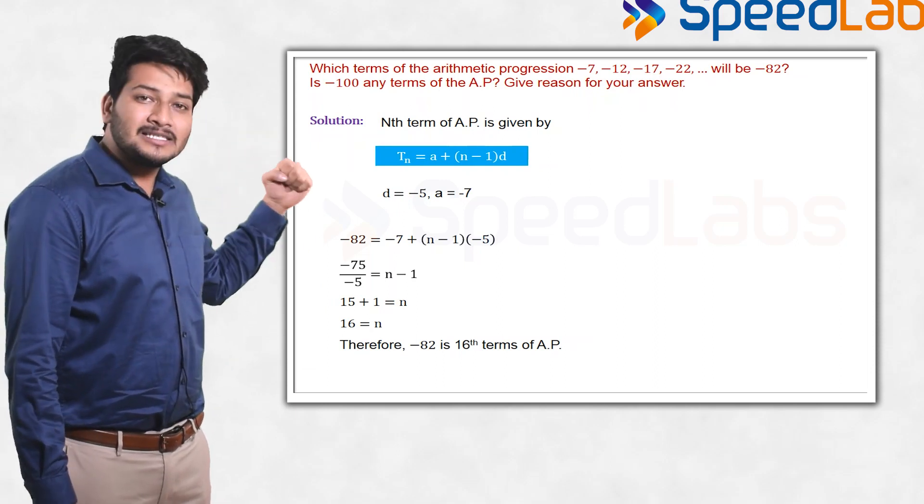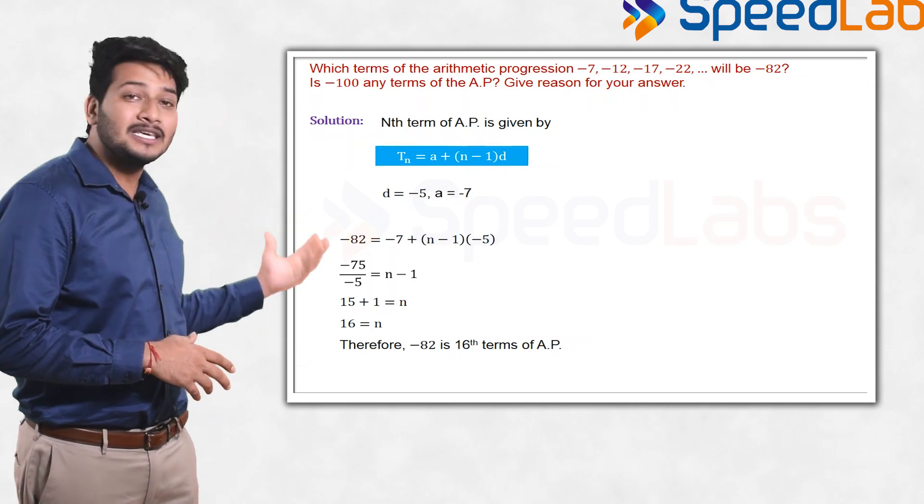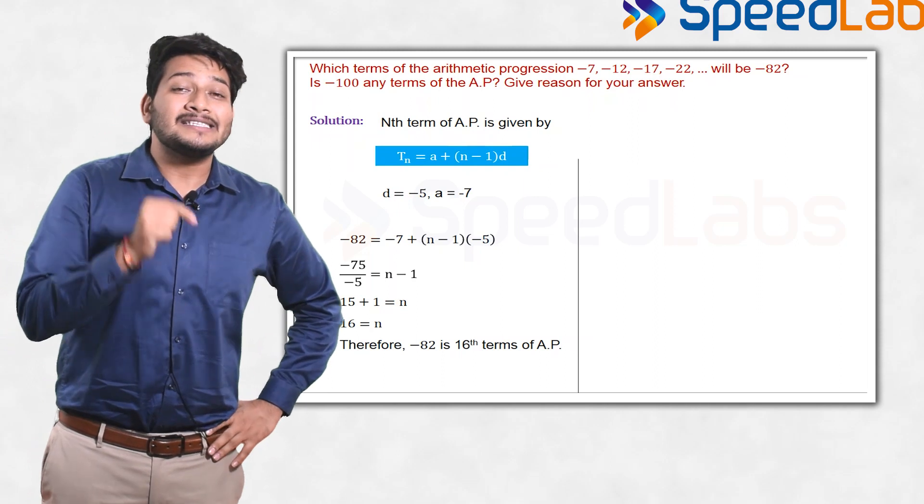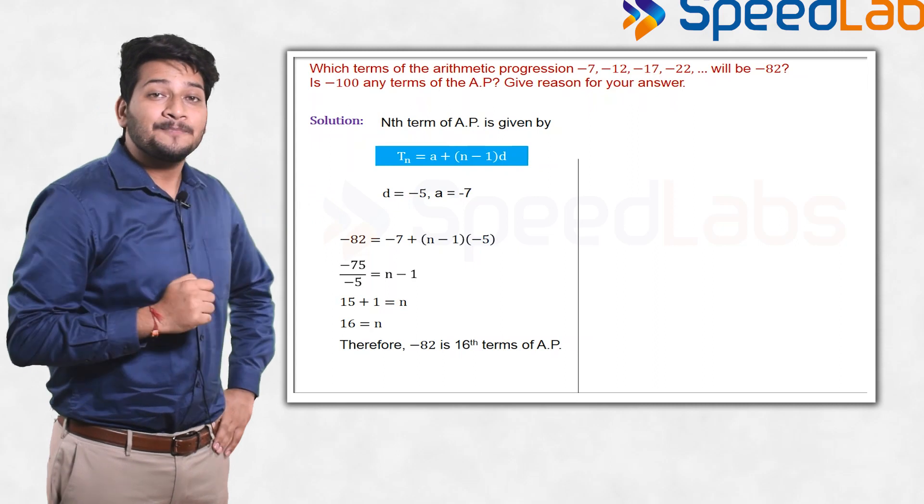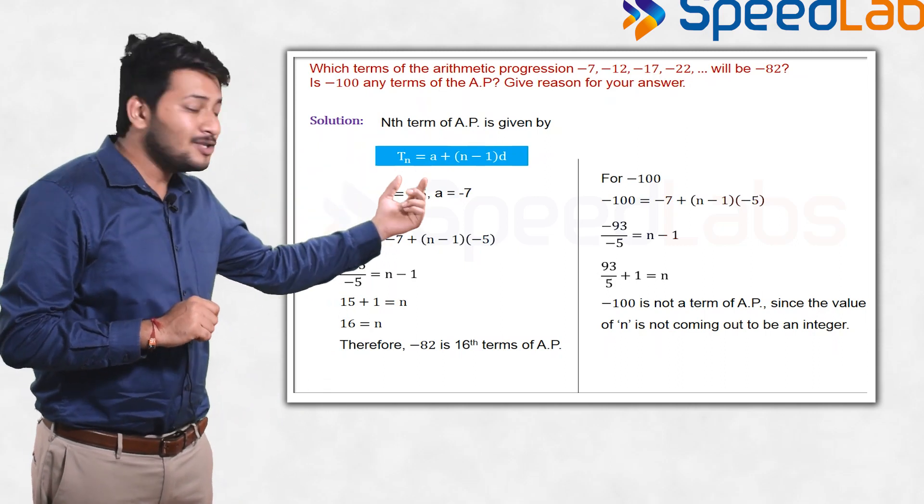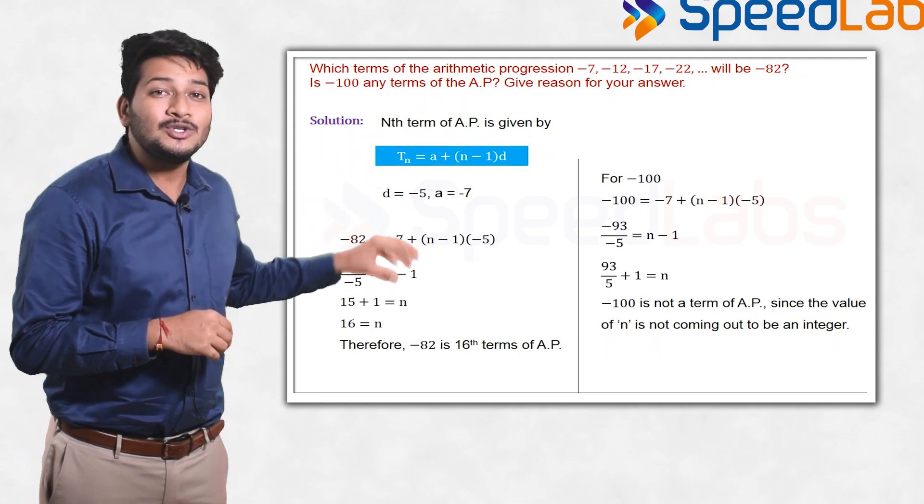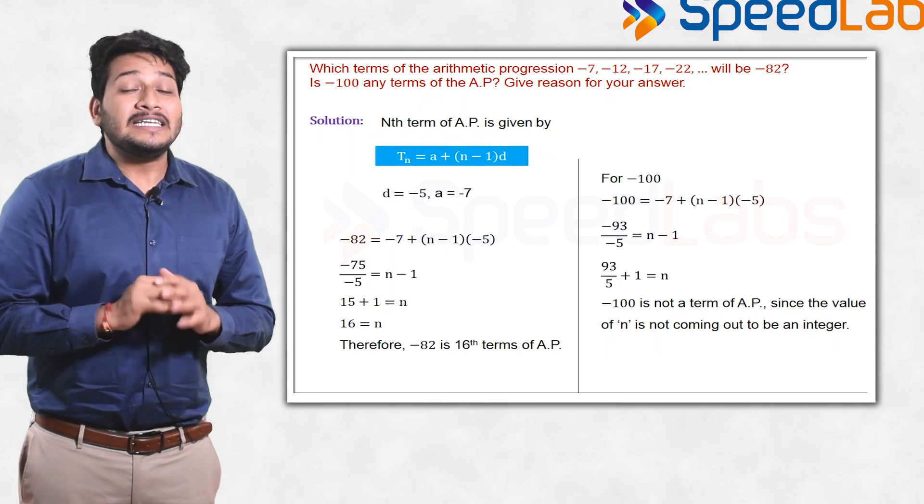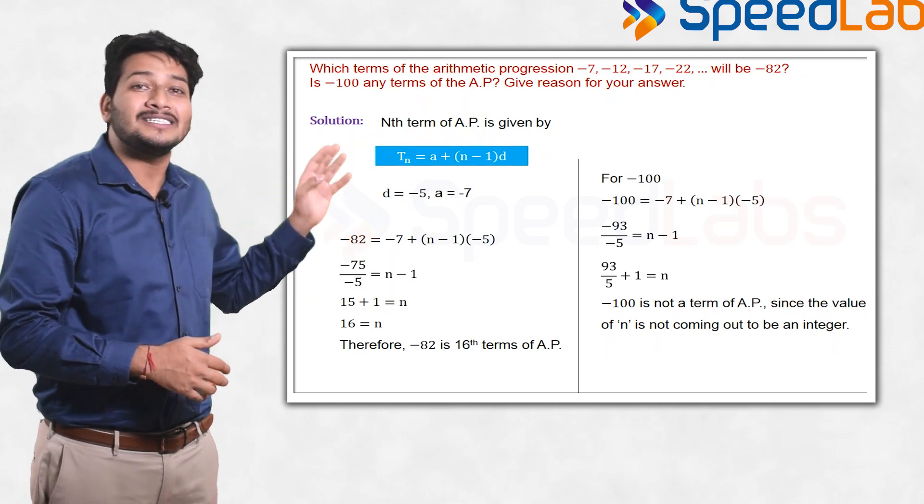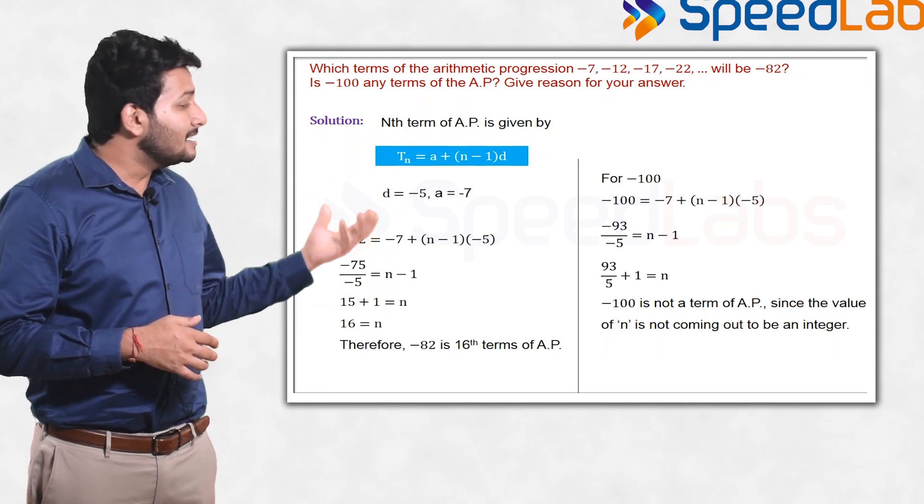In the next part, you're asked whether -100 is a part of this progression. You set Tₙ equal to -100. So -100 = a + (n-1)d, where a is -7 and d is -5. Calculate n. If you solve this, the value of n will be a fraction, not an integer. Any term, the nth term, cannot be in fraction form. It has to be the first term, 10th term, 16th term—some integer term. So we can say that -100 is not a part of this arithmetic progression.